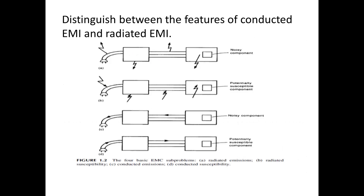In category A, there are noisy components surrounded by main components which are connected with the same power cord. In B, there is potentially susceptible equipment which has its own noise, because of which the other component is also affected. In C, the noisy component internally sends noise to other devices or to the power port. In D, the potentially susceptible component receives the noise from the equipment. All these conducted EMI and radiated EMI features can be seen in this diagram.